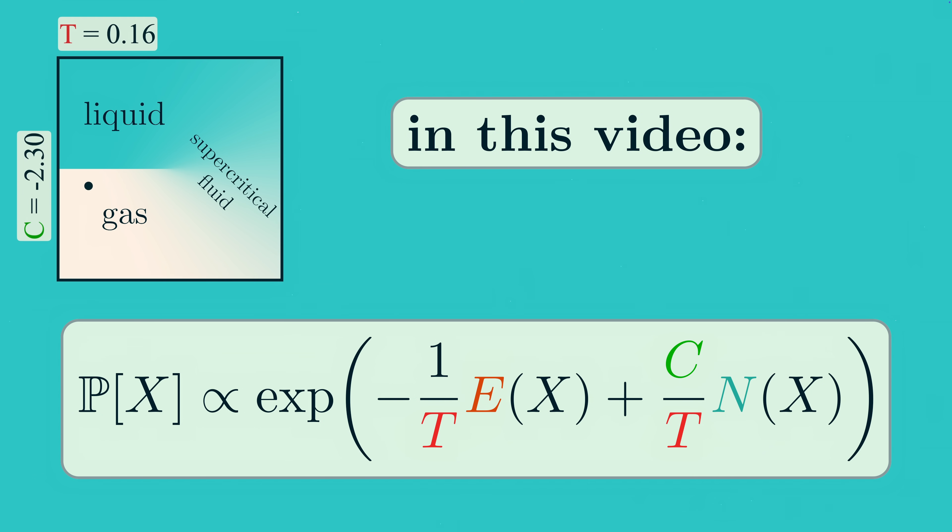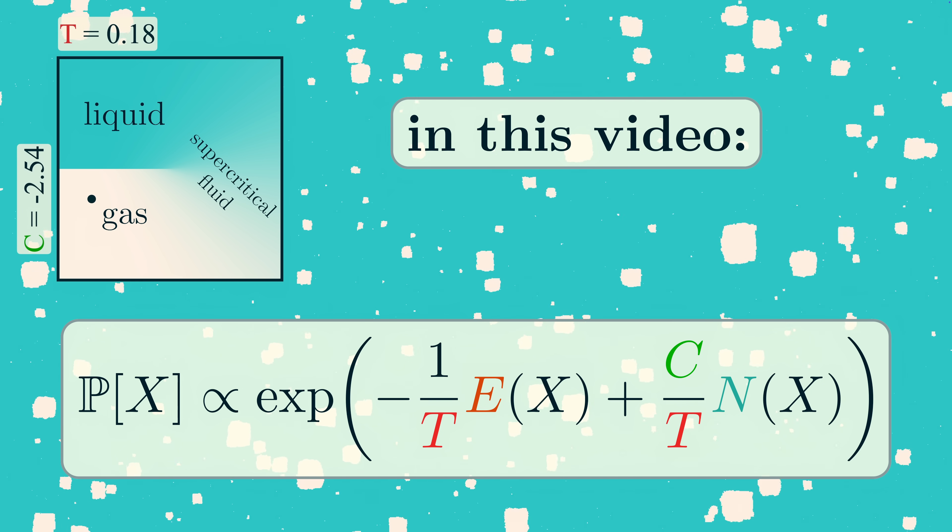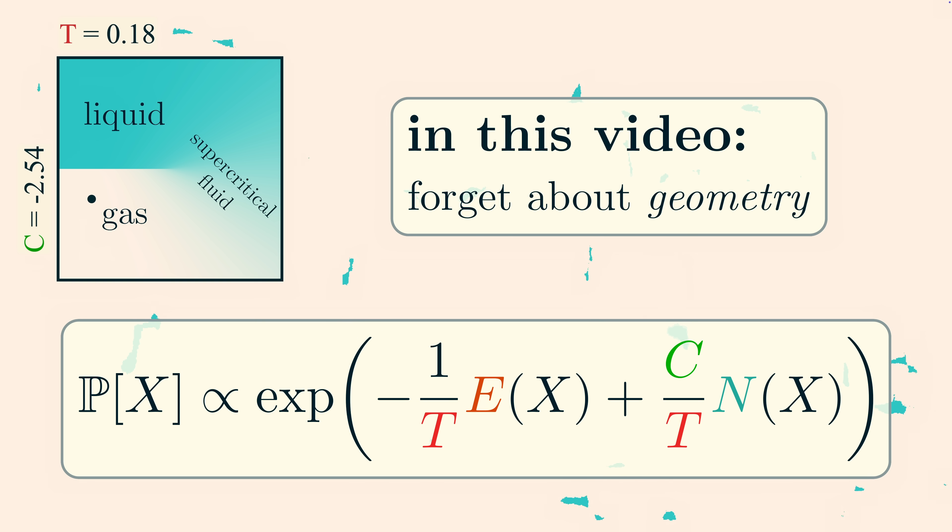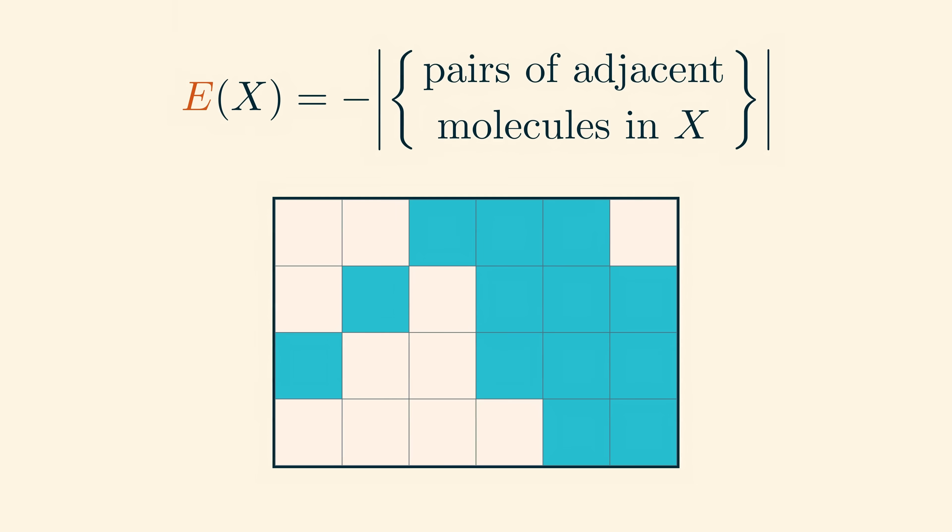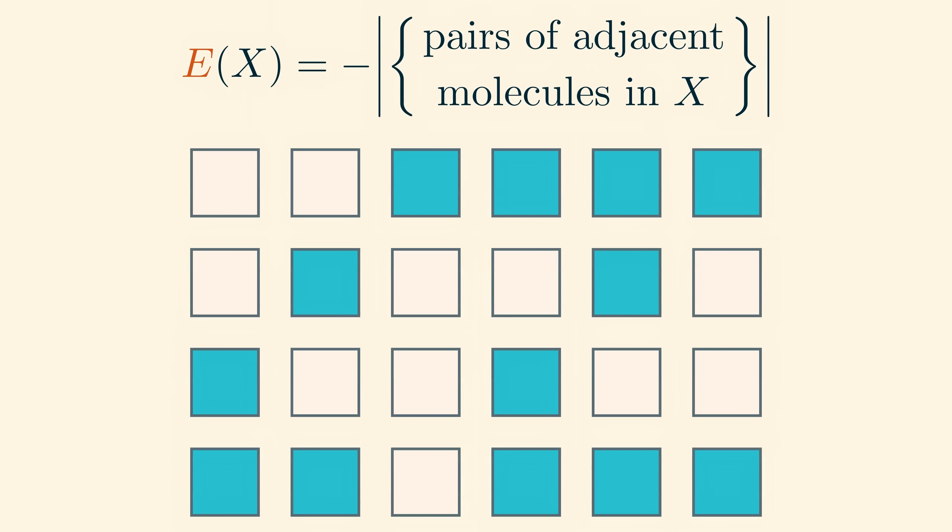In this video, we'll study an even simpler version of this model, where we essentially forget about the geometry of the underlying space. To see what I mean, remember that in the previous video, the energy of a microstate was given by minus one times the number of pairs of molecules that are next to each other in the lattice of pixels. Knowing when things are next to each other depends on the geometry of the lattice. We can think about it as a relationship between neighboring pixels.